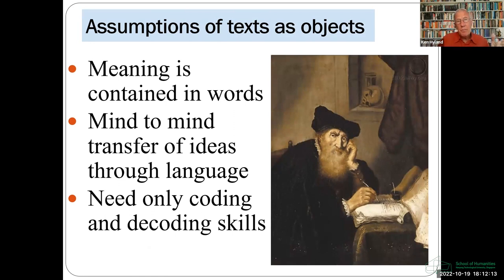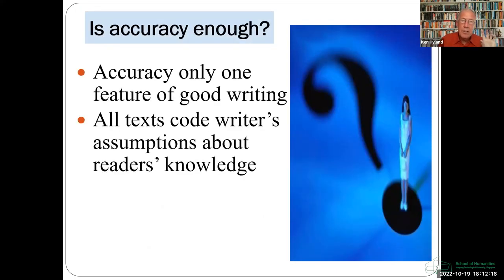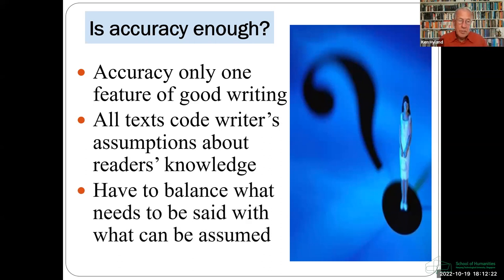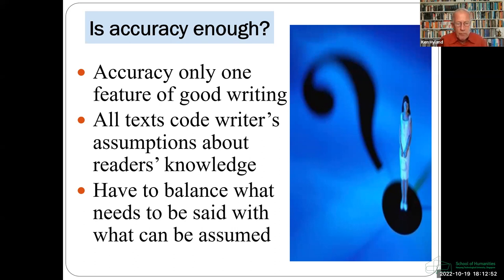But this doesn't make sense, of course, because accuracy is just one feature of good writing, and on its own it doesn't make communication. This is how lawyers make their money — they dispute and pick over the most explicitly written contracts and documents. So our goal as writing teachers can never be just training students in accuracy, because all texts include what writers assume their readers will know and how they're going to use the text. The writer's problem is not to make everything explicit, but to make it explicit for particular readers, balancing what needs to be said against what can be assumed. This model sees text as independent of any real-life users, and adopting it as a teaching approach can mislead students into thinking they just need to write accurately to be effective.